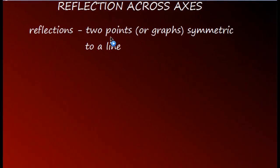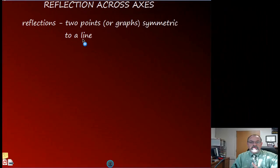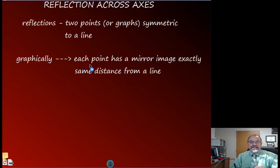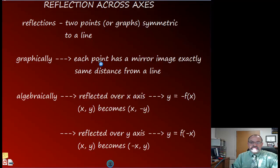A reflection consists of two points or graphs that are symmetric to some line in the coordinate plane. We talked about reflections over the line y equals x when discussing inverses. In this lesson we're going to look specifically at the x-axis and the y-axis. Graphically, each point on one side of the line has a mirror image that is exactly the same distance from that line.